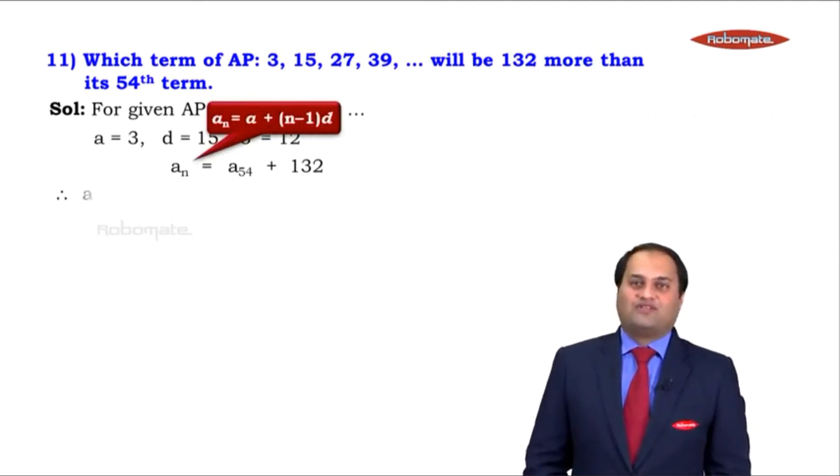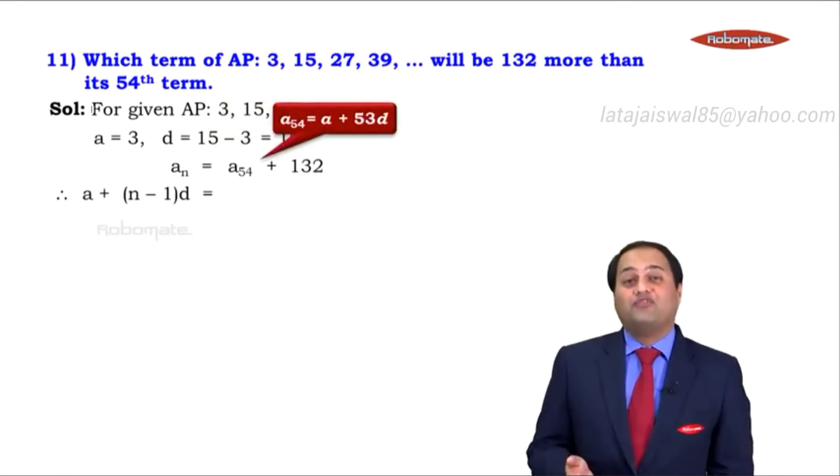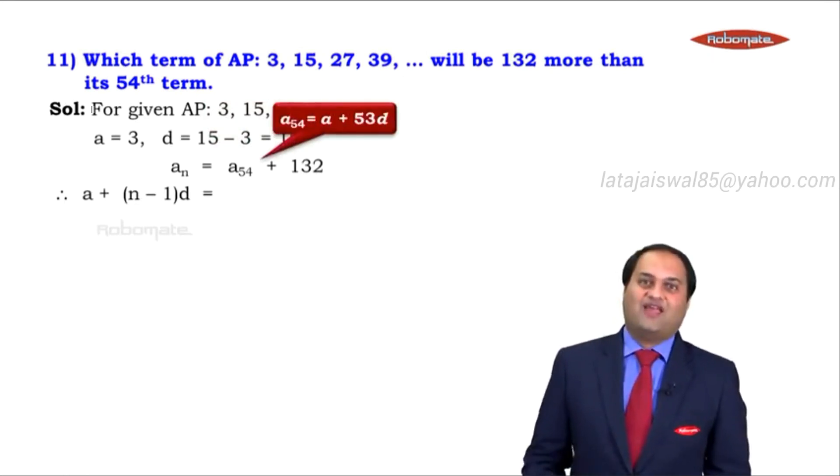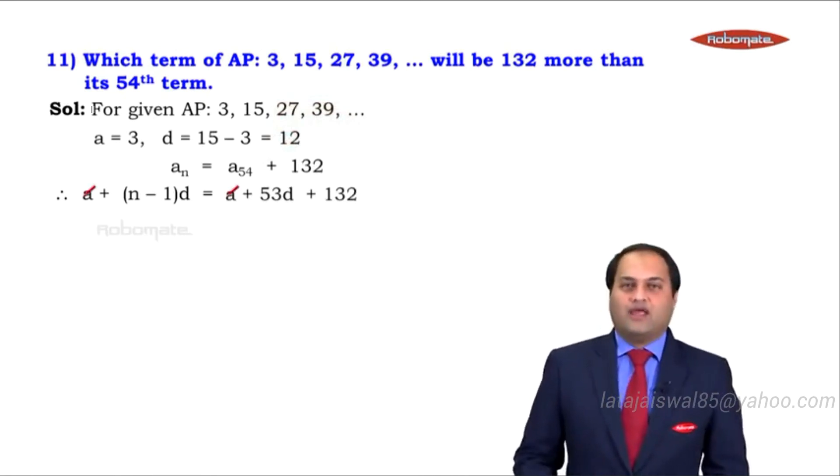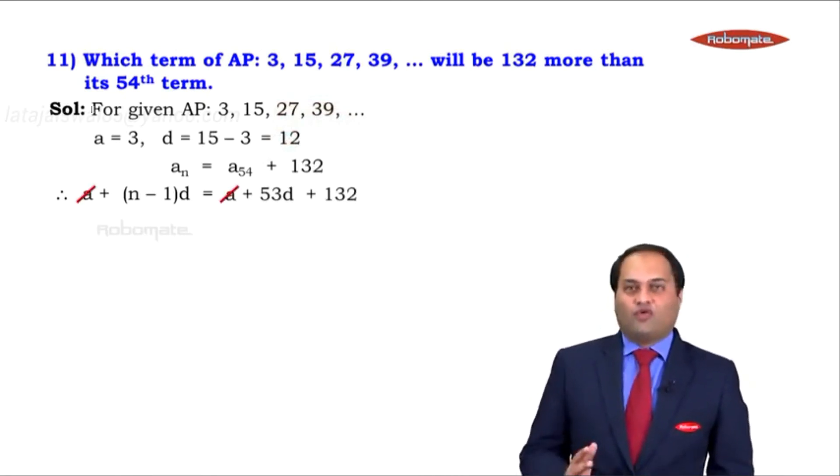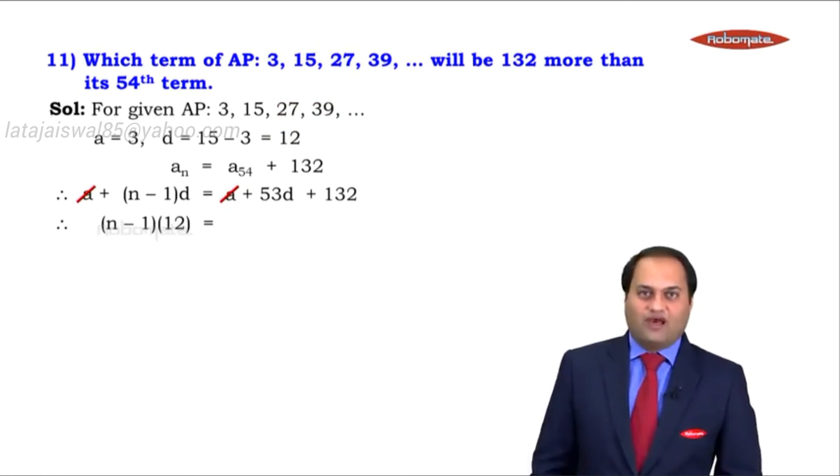How do we do it? In place of an we write a plus (n minus 1) into d. In place of a54 we write a plus 53d plus 132. a gets cancelled. What remains is (n minus 1) into 12. d value is 12, 53 into 12 plus 132.